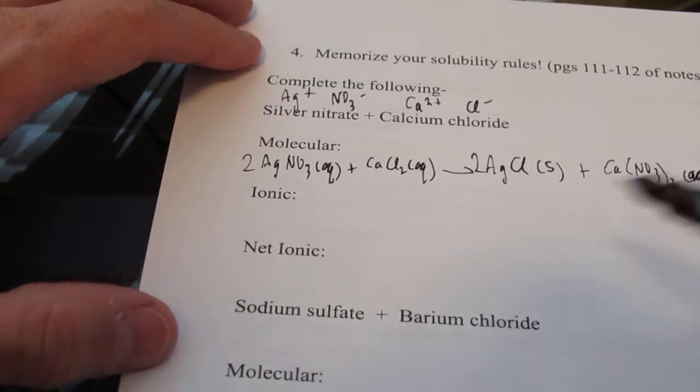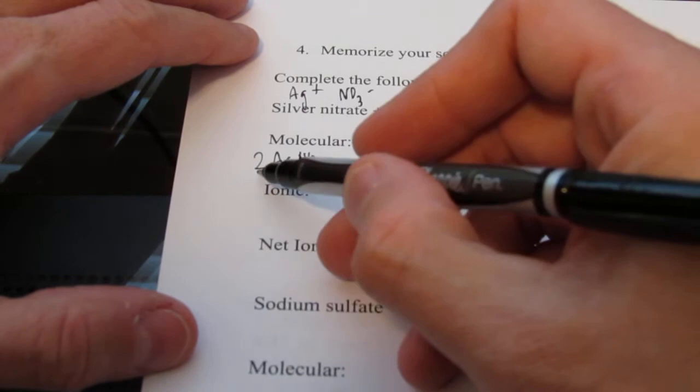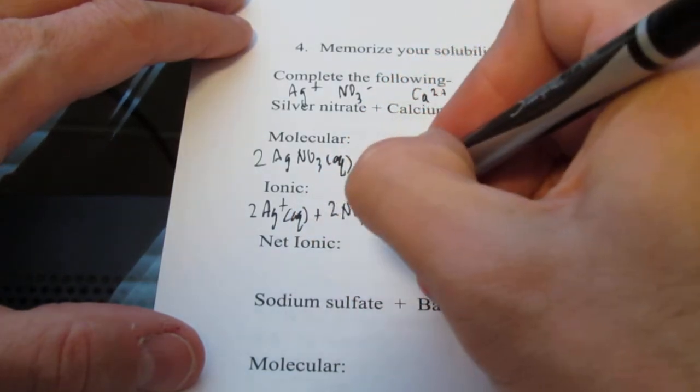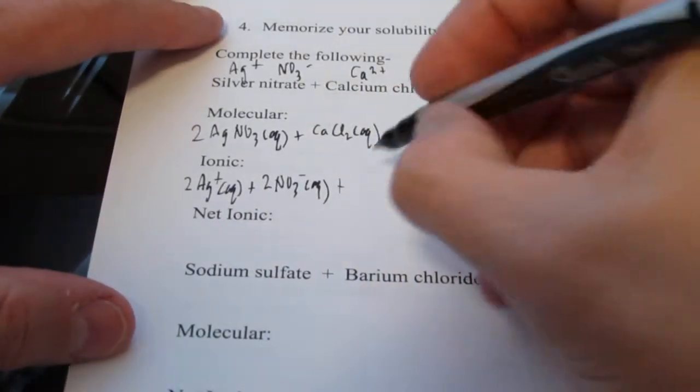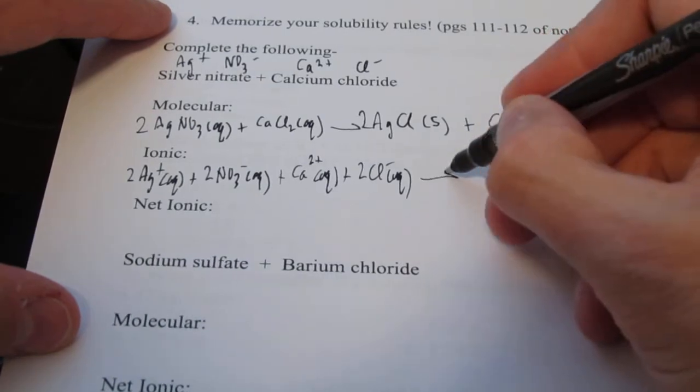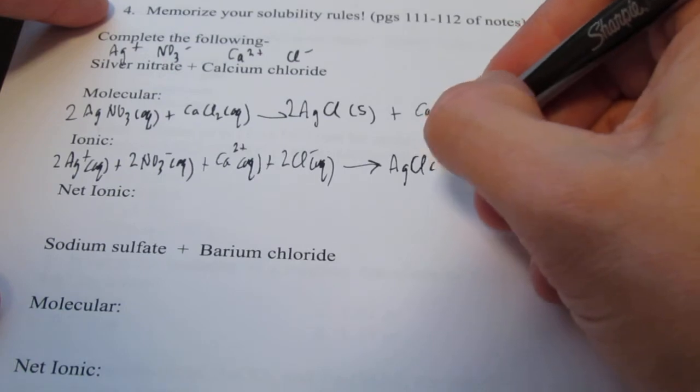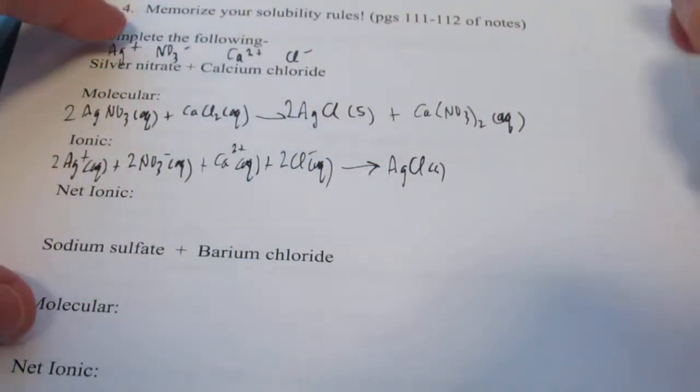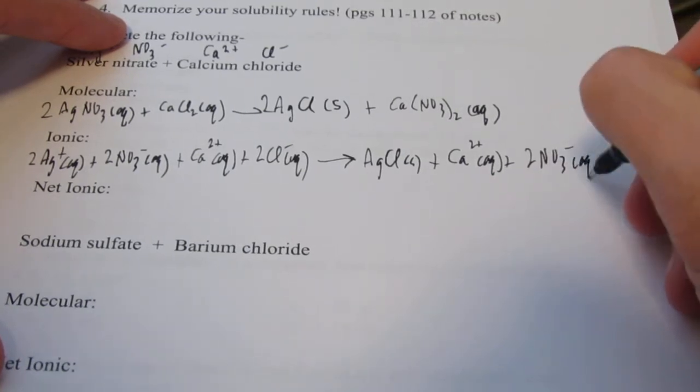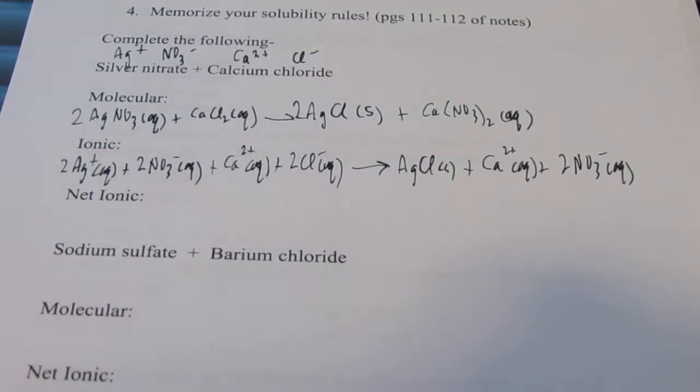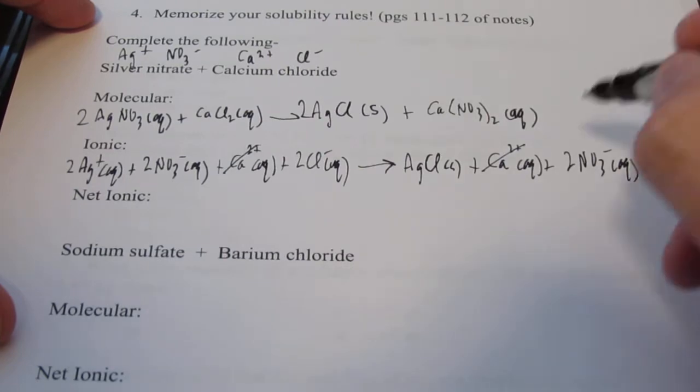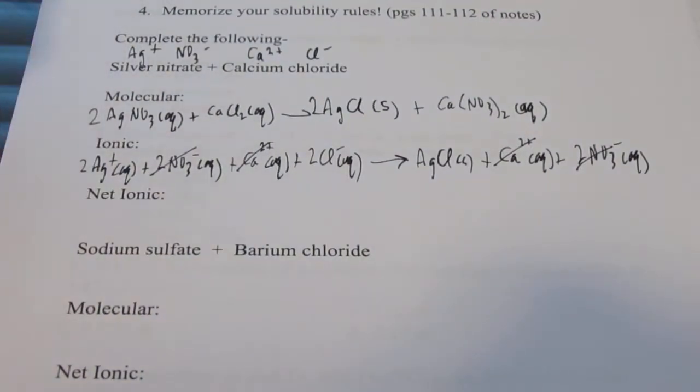Now let's write this ionically. If these ionic compounds are soluble, we dissociate the ions. We have two silver nitrates which dissociate into 2 Ag+ ions and 2 nitrate ions. My calcium chloride is soluble, so that dissociates into a calcium 2+ ion and 2 chloride ions. On the product side, my AgCl is a solid, which means it sticks together. Water is not strong enough to separate those ions from each other. The calcium nitrate dissociates, so I have calcium 2+ aq and 2 nitrates aq. That is my full ionic.